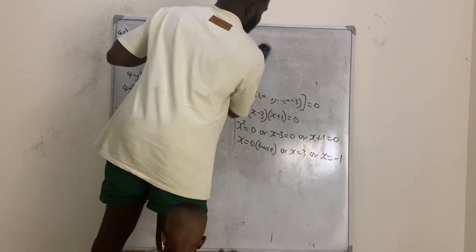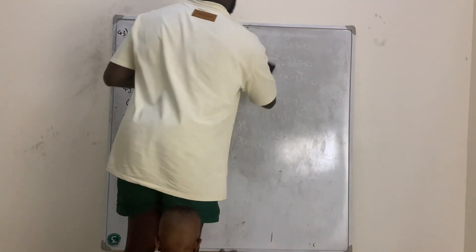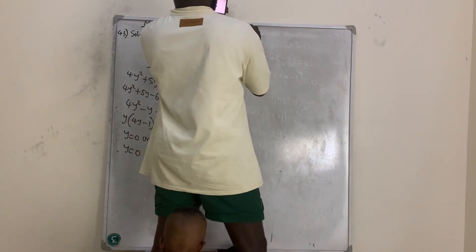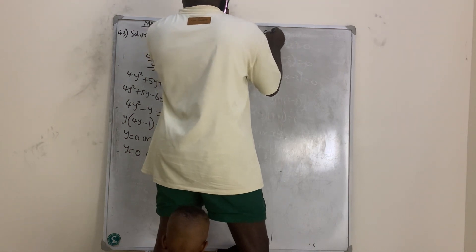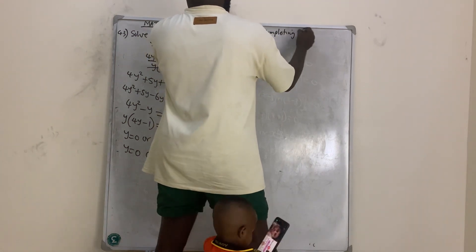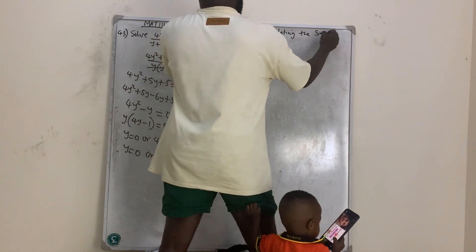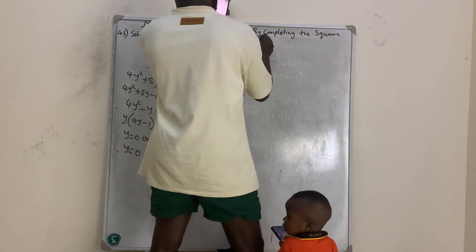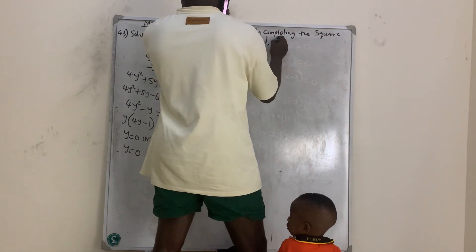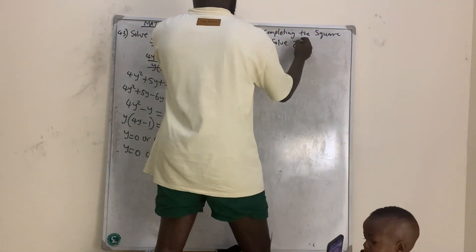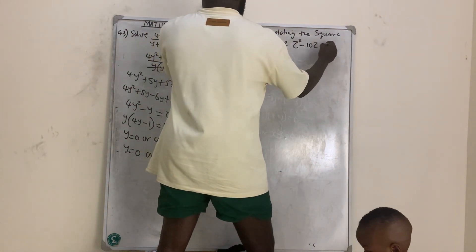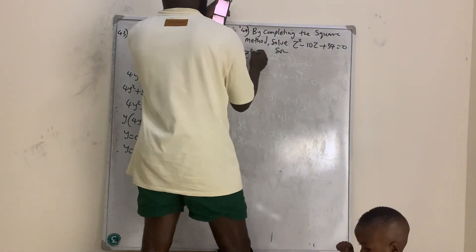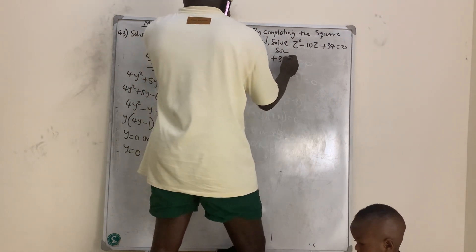We move to question number 44: by completing the square method, solve z squared minus 10z plus 34 equals zero.